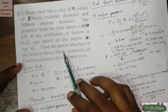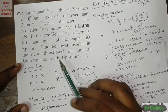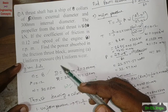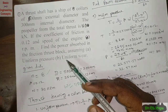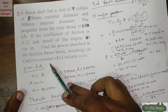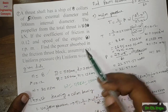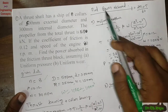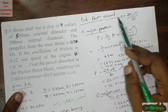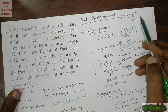We need to find the power absorbed in the friction thrust block. The power formula is P = 2πNT/60. Once the torque T is calculated, the power can be found. There are two theories in the design of bearings: uniform pressure consideration and uniform wear consideration.